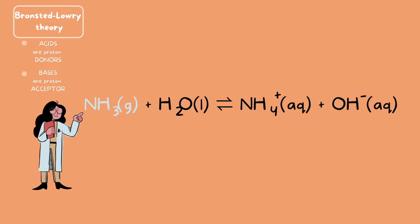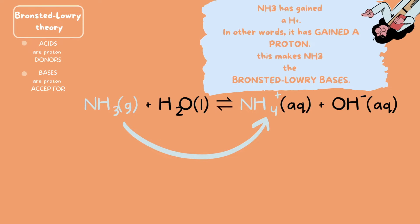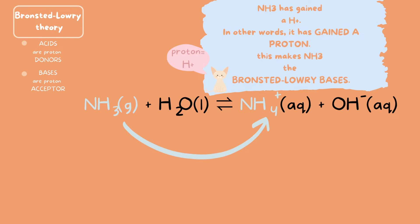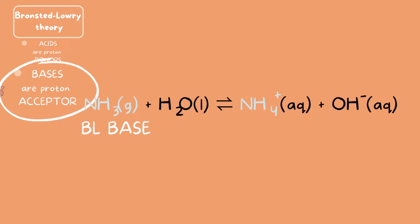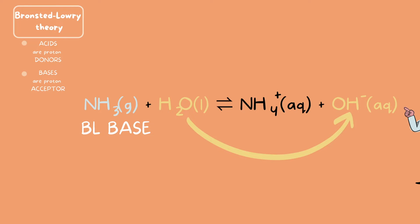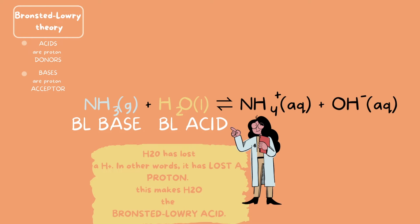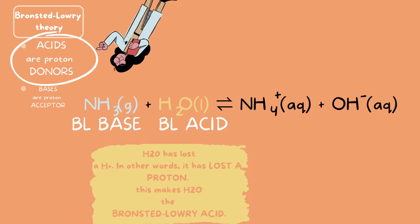Remember, acids are proton donors and bases are proton acceptors. In this example, we have NH3, and on the solution side it turns into NH4+. So NH3 has gained a hydrogen ion — in other words, it has gained a proton, because a proton equals a hydrogen ion. This makes NH3 the Bronsted-Lowry base, because bases are proton acceptors and NH3 has accepted a proton. H2O turns into OH−, which means H2O has lost a hydrogen ion, or lost a proton.